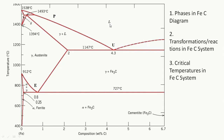A transformation or reaction means when the liquid is cooled, it converts into specific metals or combinations. The reaction point determines what conversion happens - solid to another solid, or liquid to solid combinations. These are called transformations or reactions in the Iron-Carbon system. Critical temperatures are the temperatures at which phase changes occur - where a solid phase converts to another solid phase, or a liquid converts to a solid phase.